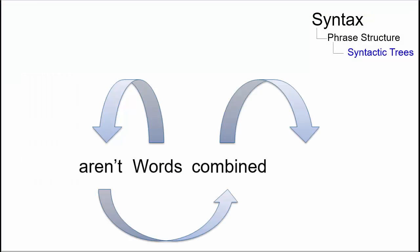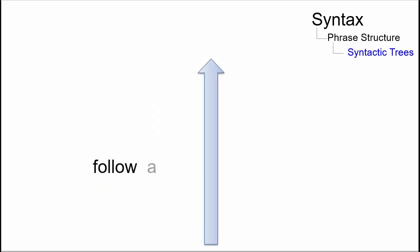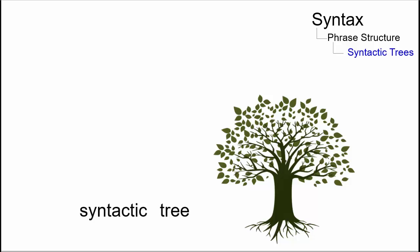Words aren't combined randomly to form sentences. They follow a hierarchical structure which can be represented as a syntactic tree. The major nodes of a syntactic tree are called phrases.